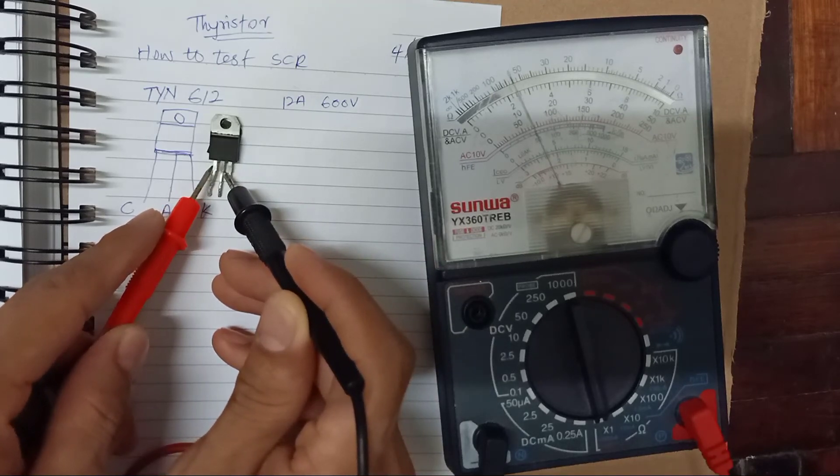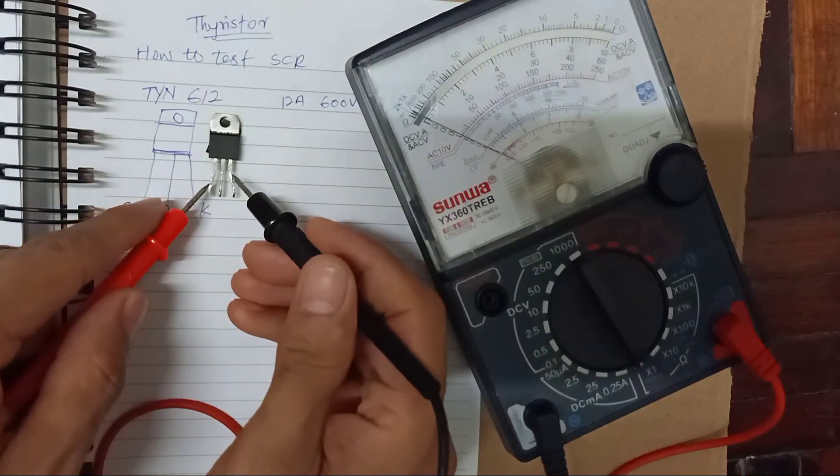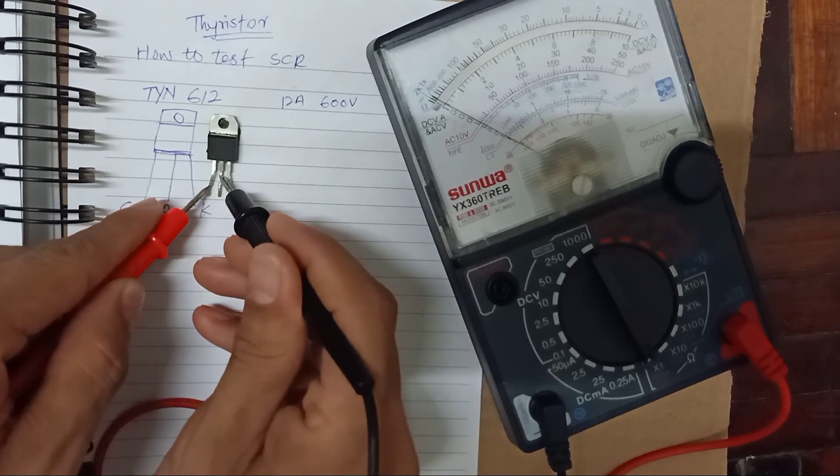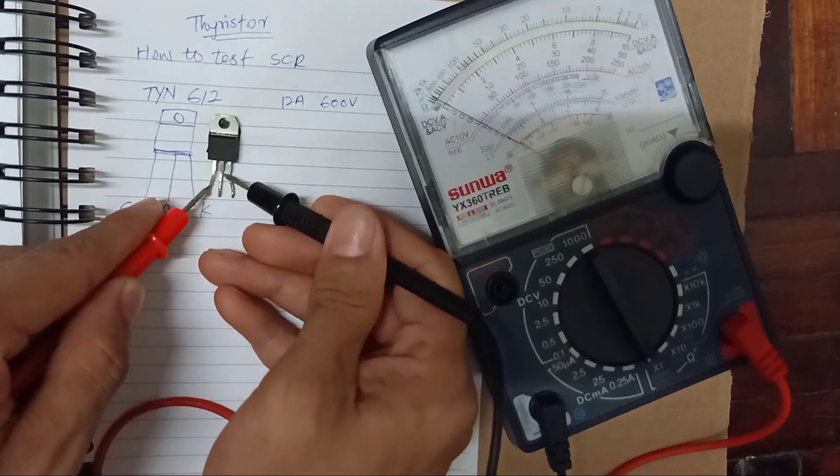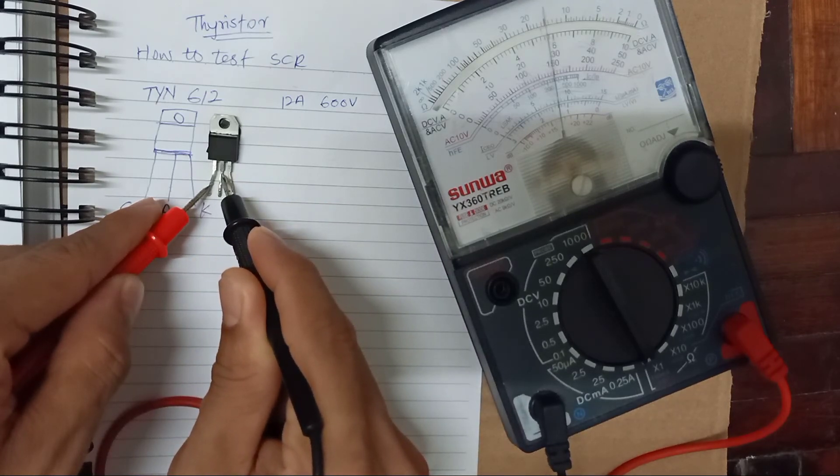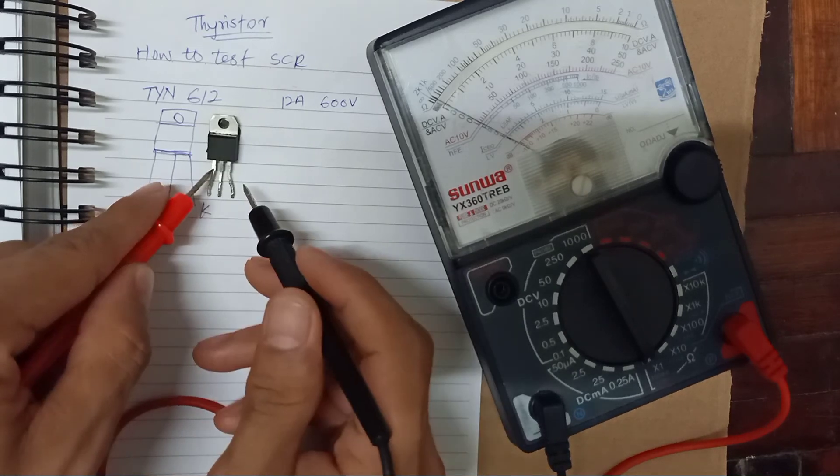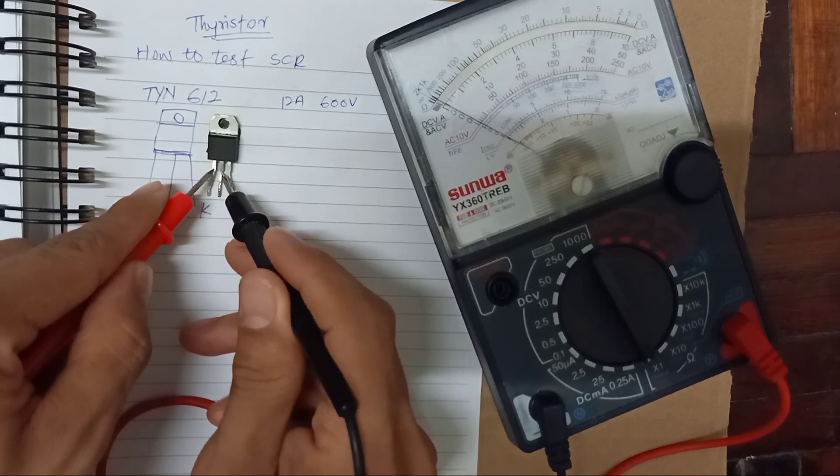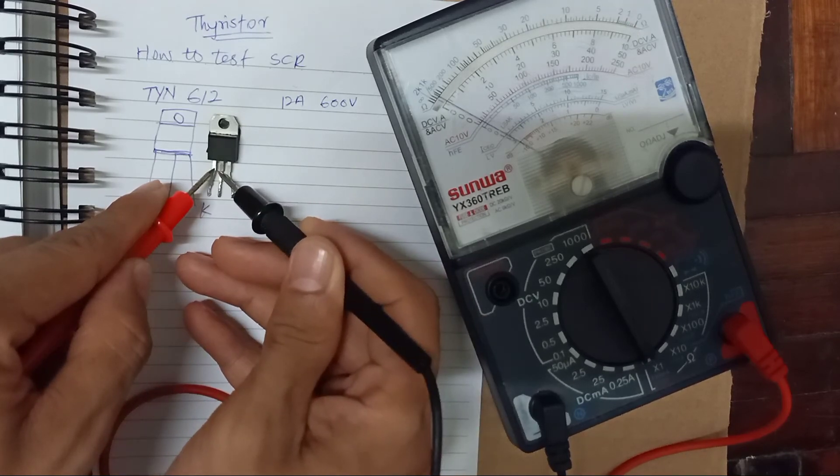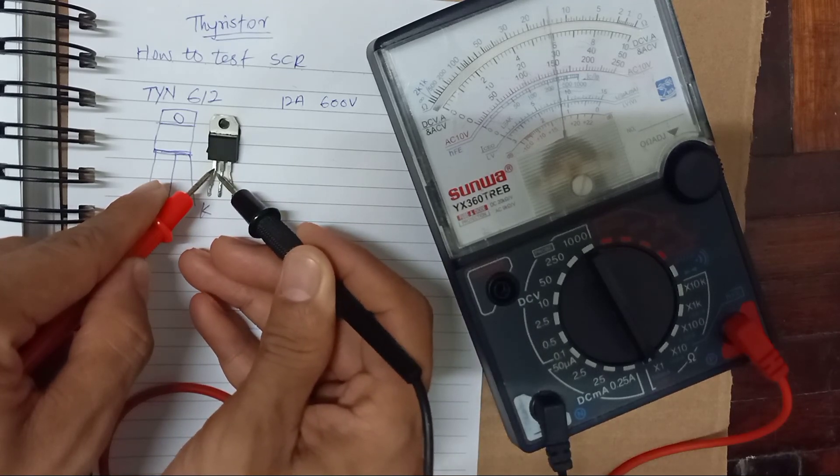So you see the multimeter is holding here. And we do again. Okay, gate-out and anode-out, short, you release, and still holding. So this SCR is in good condition. Trying again, gate-out and anode-out gate, we short to the gate, then still hold it. So this SCR is in good condition.